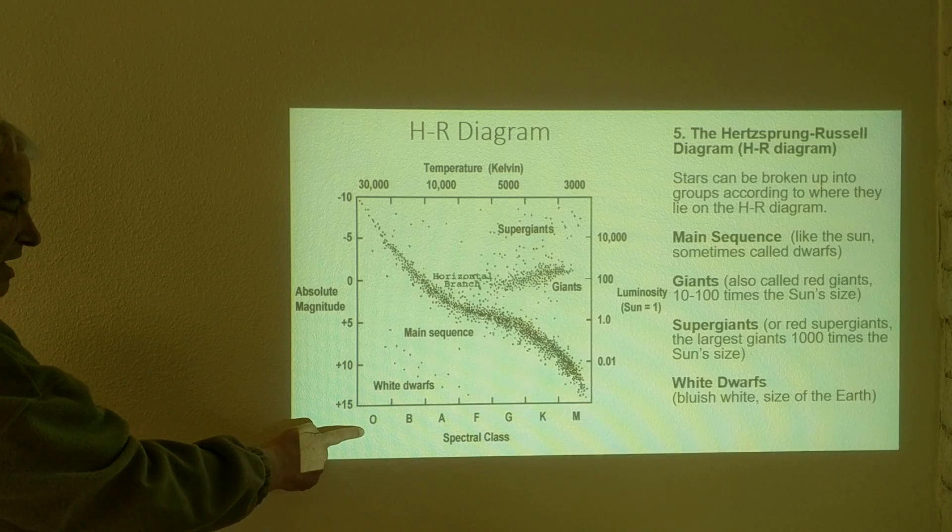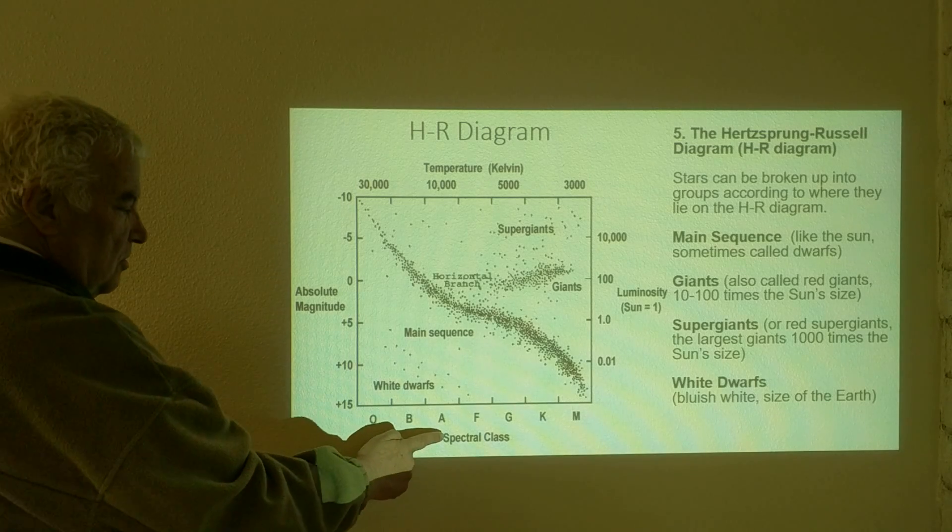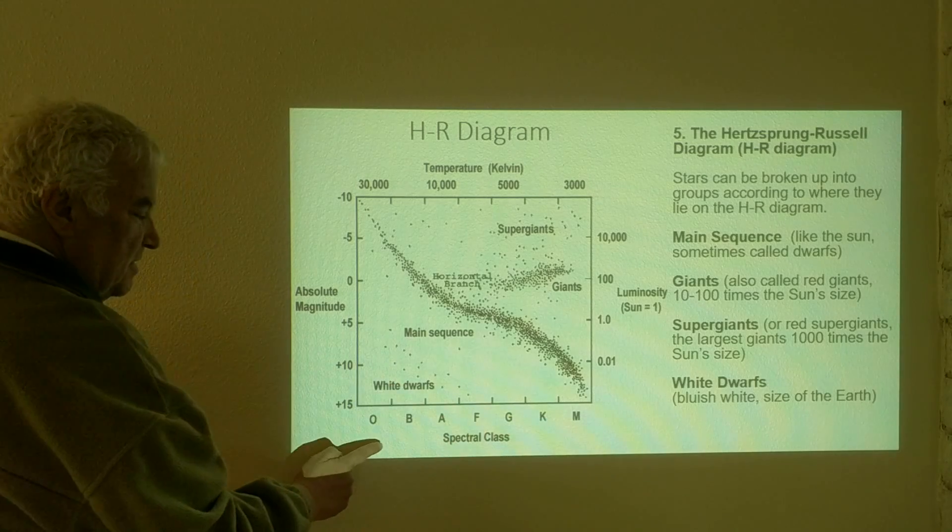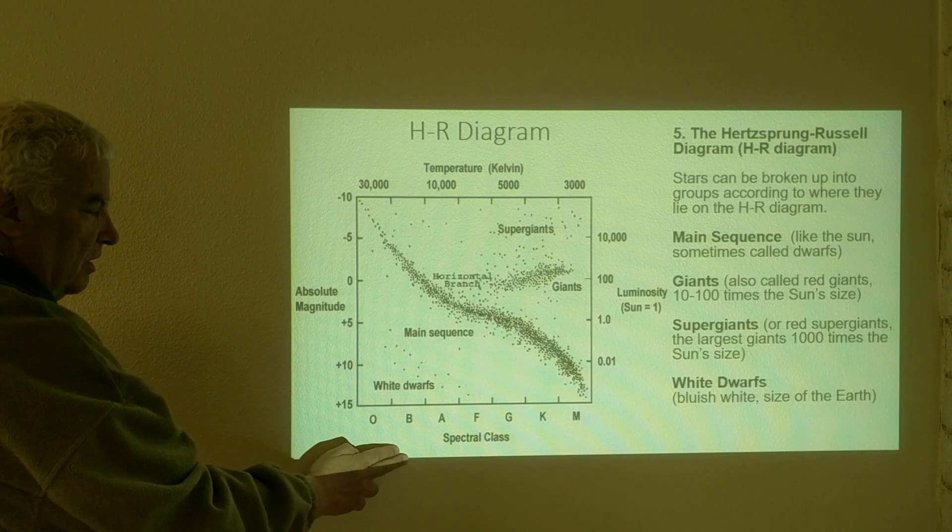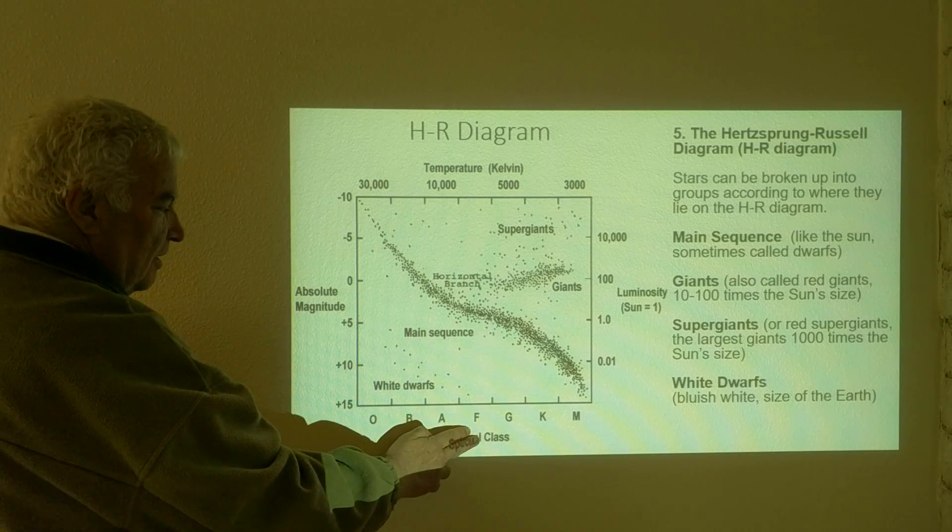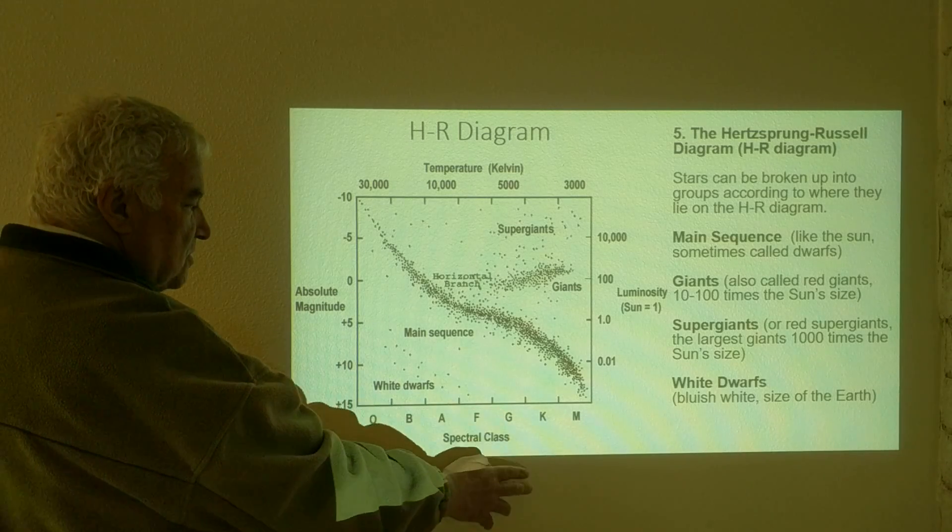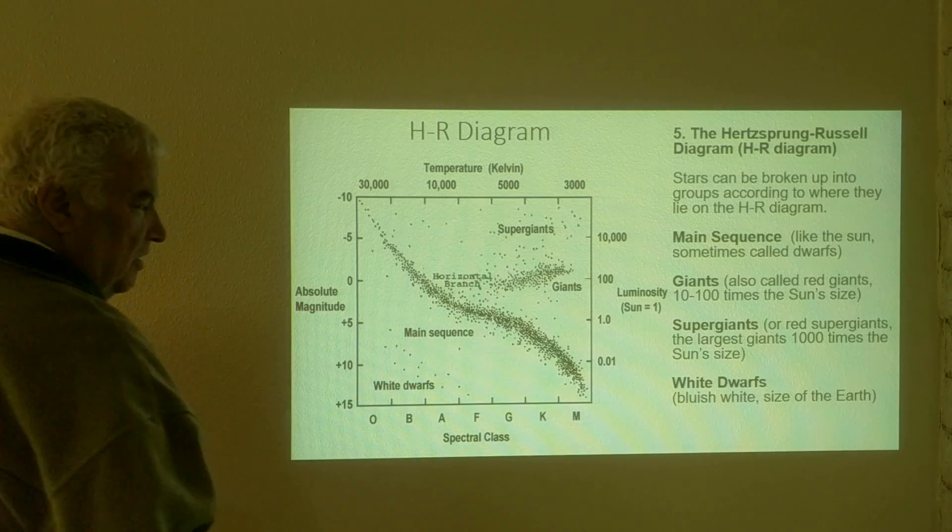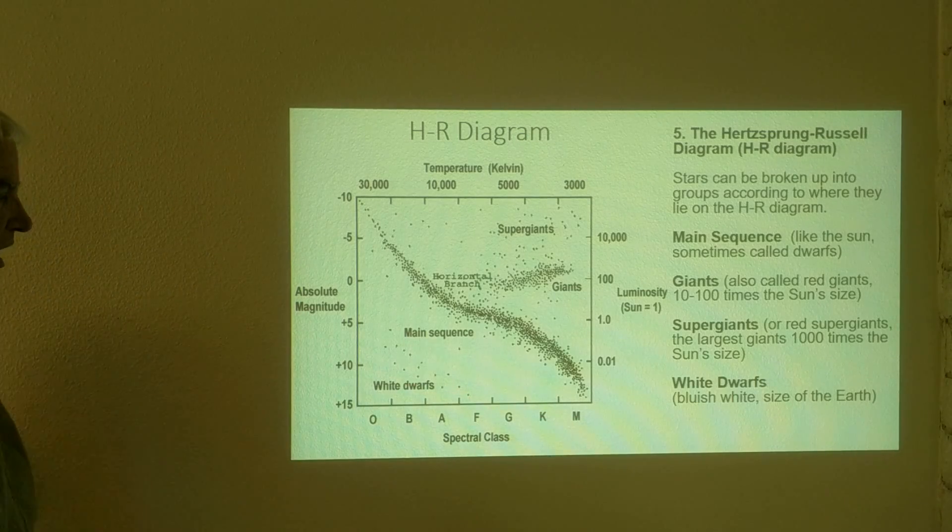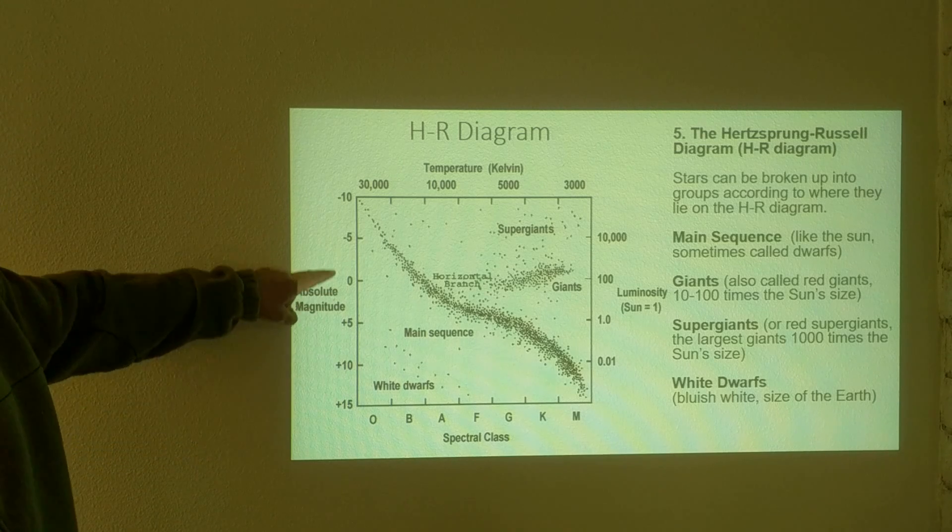where we have the hottest to the coolest. And this is also, these are blue, yellow in the middle. The sun is a G2 type star and M on the right. And then we have the absolute magnitude.